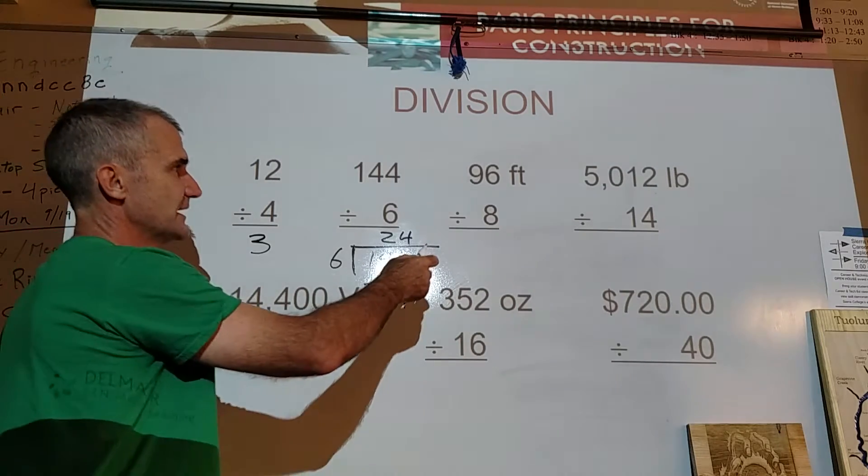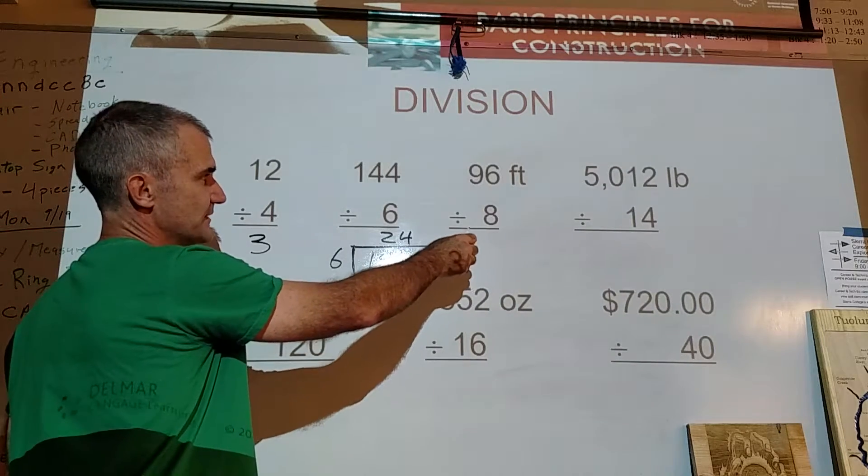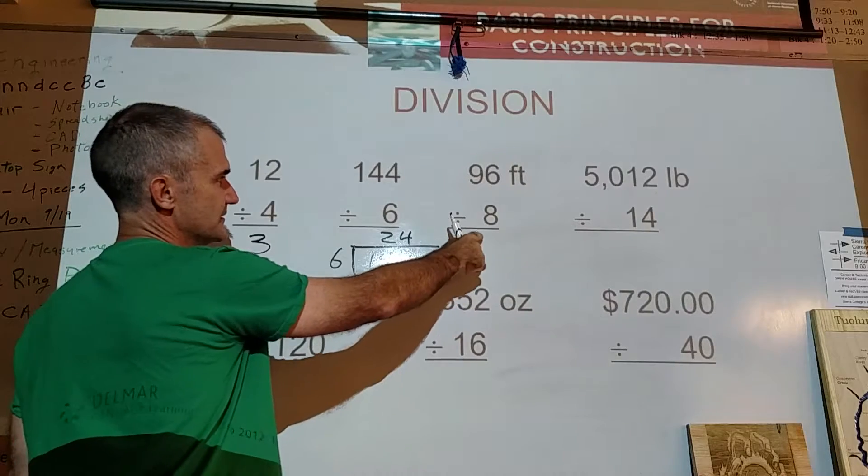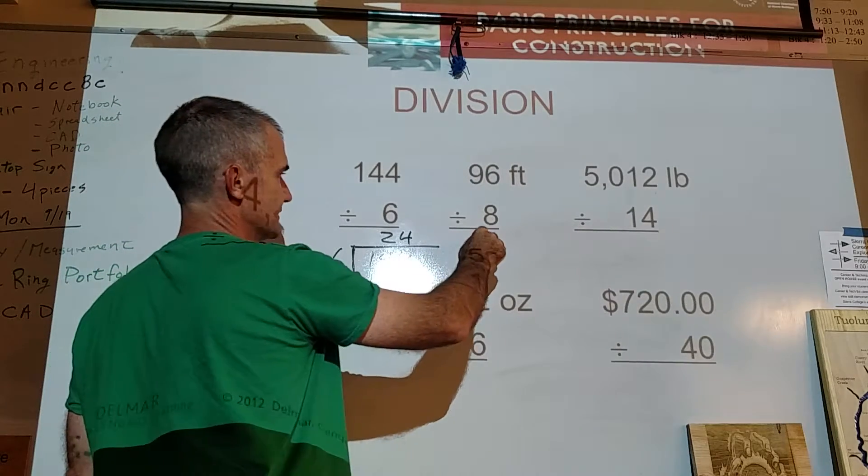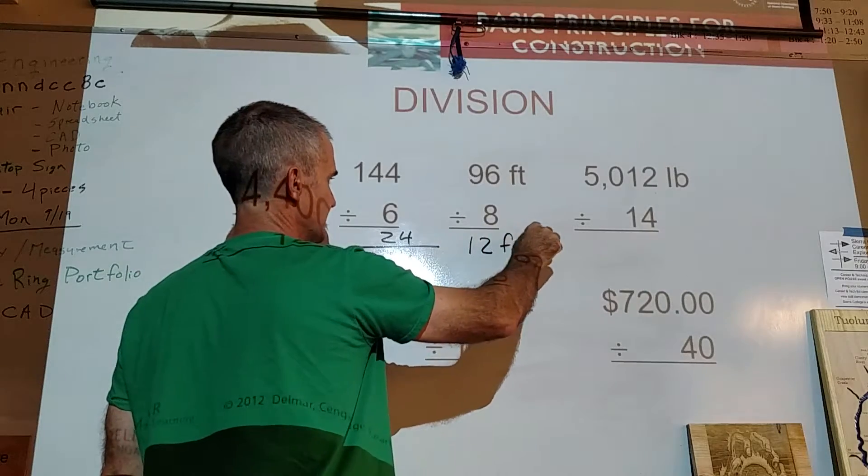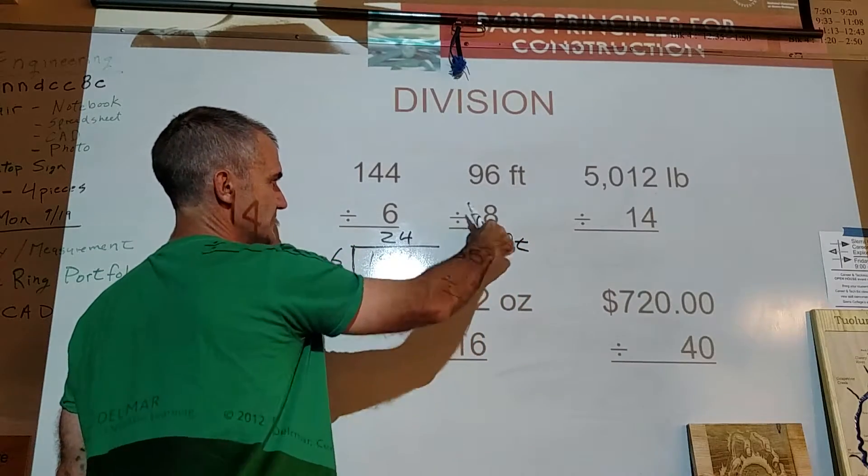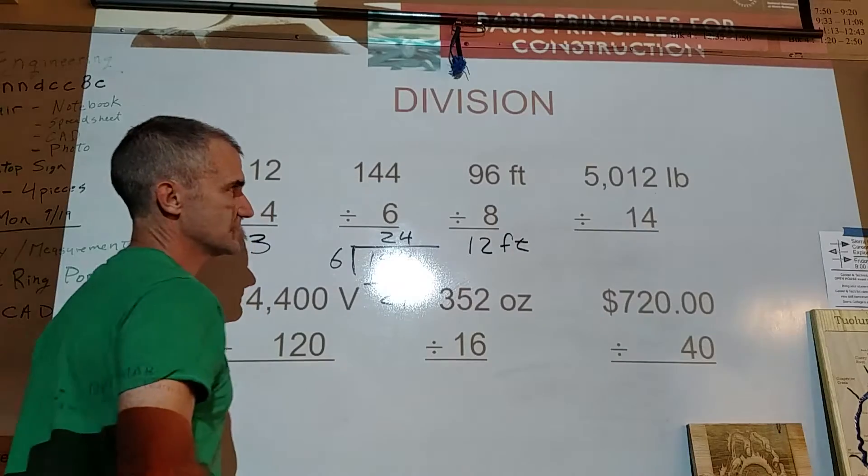96 feet divided by 8. That's a math fact. So I should know that's going to be 12. Let me double check that. 12 feet. 12 times 8 is 80 plus 16 is 96. So that's right.